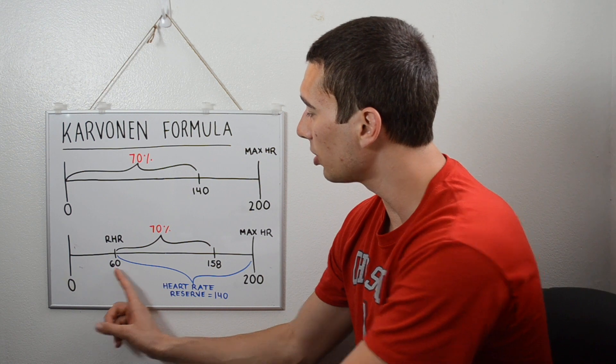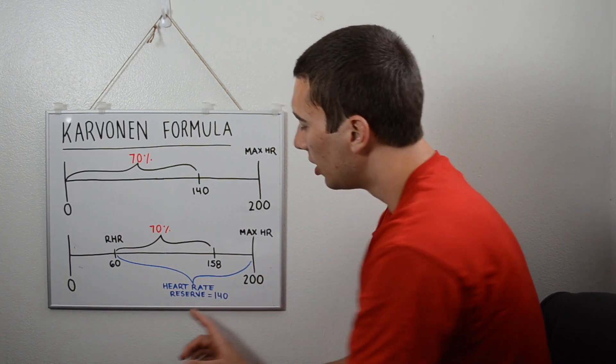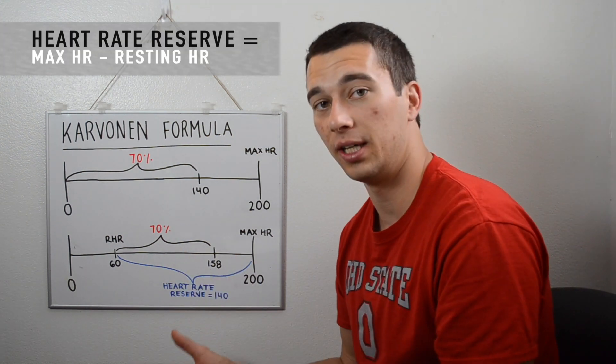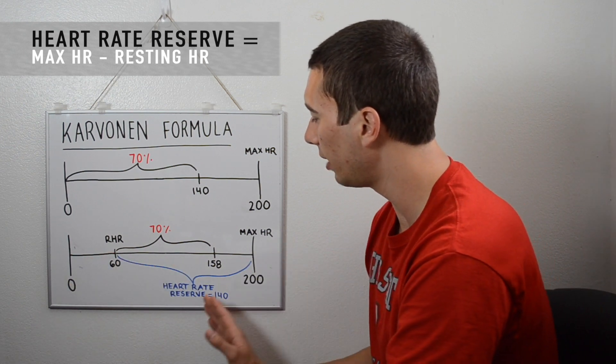We're going to take 70% of the range between their resting and their max heart rate. So really what heart rate reserve means is it's any heart rate that you can actually access. So you can't go below your resting heart rate, you can't go above your max heart rate.